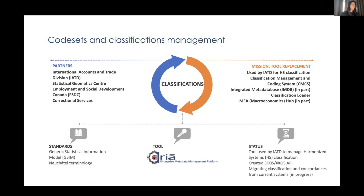First is our use case for classifications. The mission is to replace existing classification systems throughout the agency and standardize this metadata in one tool — ARIA. Over the past few years, the classification team has been working on the acquisition and deployment of ARIA, the enterprise classification management platform developed by Metadata Technologies North America and Stats New Zealand. The standards used are GSIM and the NEUCHATEL model. ARIA has been deployed at Statistics Canada and is being used by our international accounts and trade division. We're currently migrating classifications and concordances from current systems, and XCROS APIs have been created to support this migration.